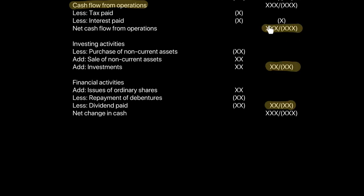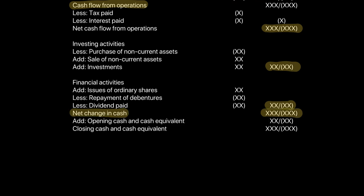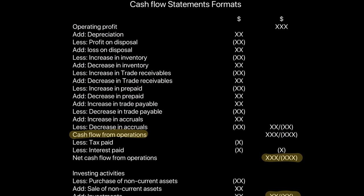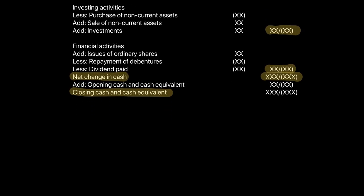Once you have net cash flow from operations after subtracting taxes and interest, this figure forms the first section of your cash flow statement. Investing activities and financing activities remain the same, giving you the net change in cash and cash equivalents. We also add the opening cash and cash equivalent balance — the previous year's opening bank and cash balance — to find the closing cash and cash equivalent. This updated cash flow statement format uses the indirect method for operating activities and reconciles to the closing balance.